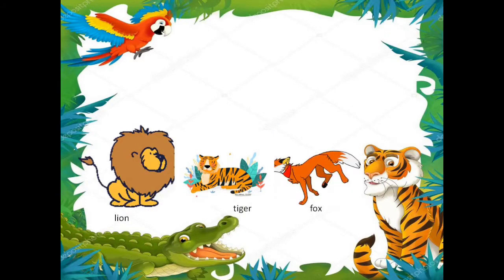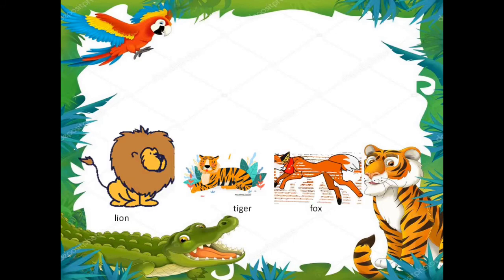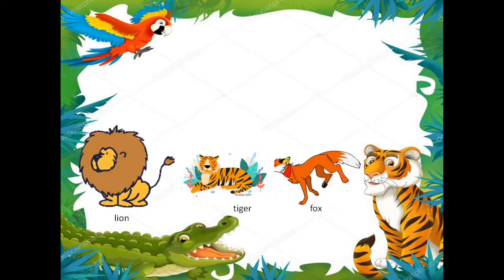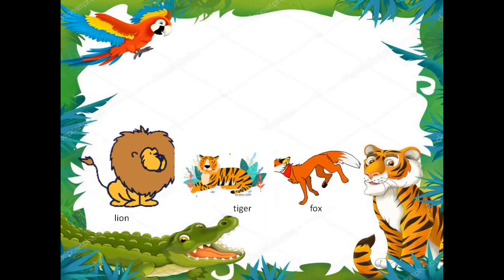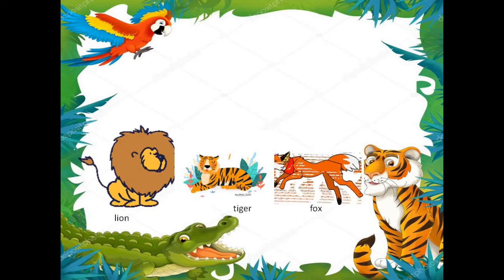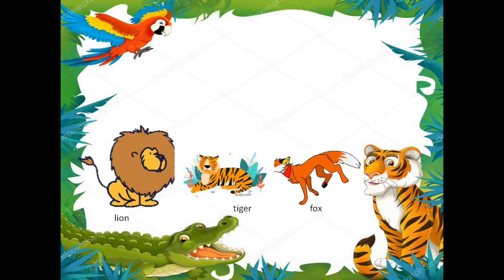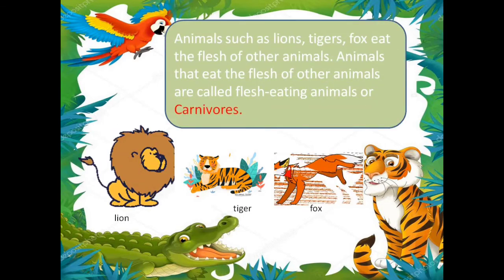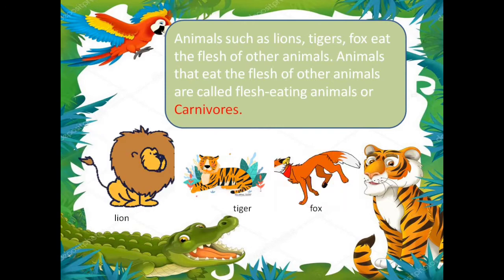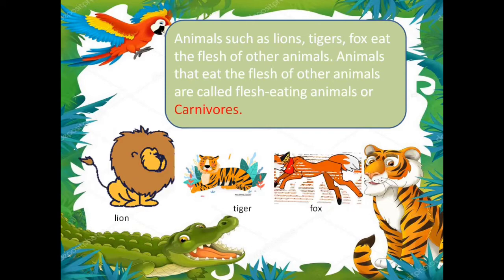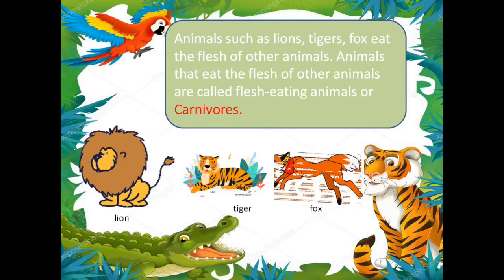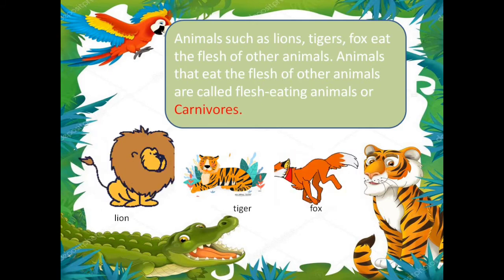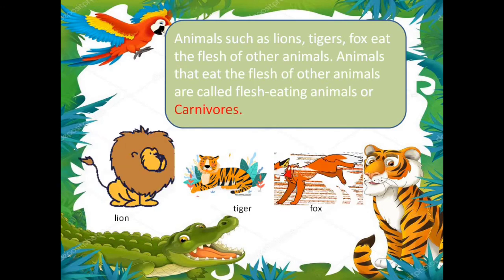Next we move to another slide that shows a lion, a tiger and a fox. Let's see which category these animals fall into. Animals such as lions, tigers and fox eat the flesh of other animals.